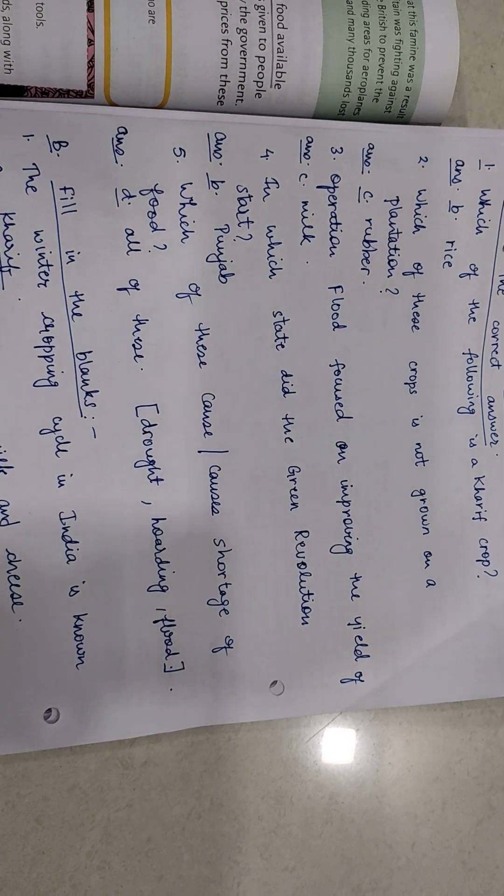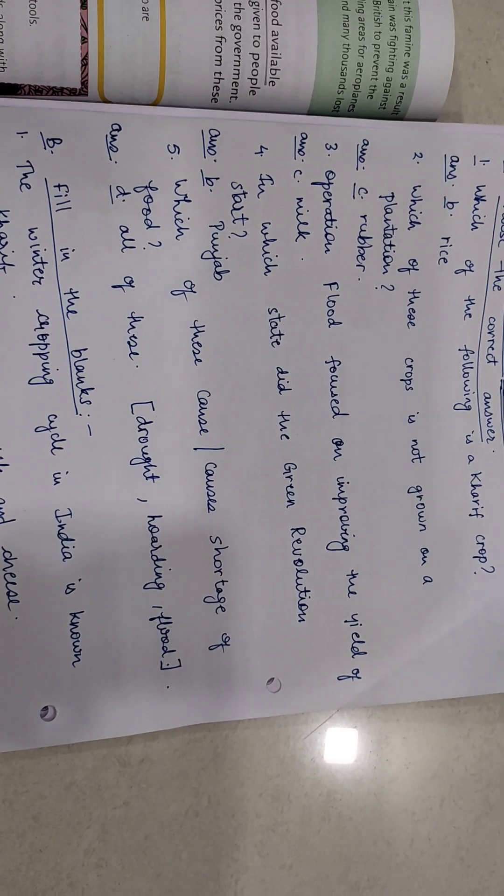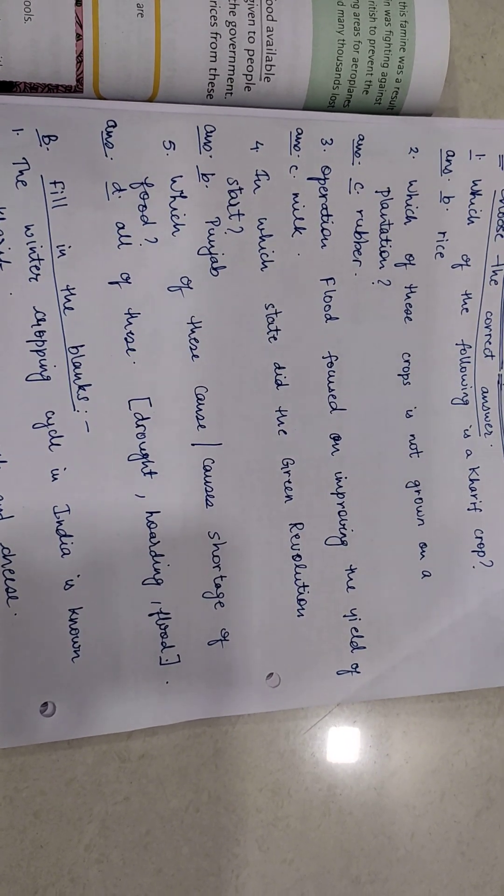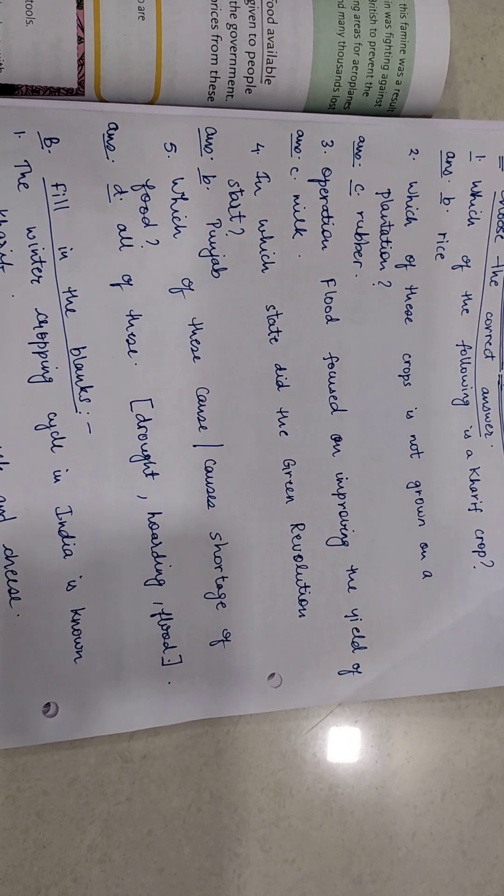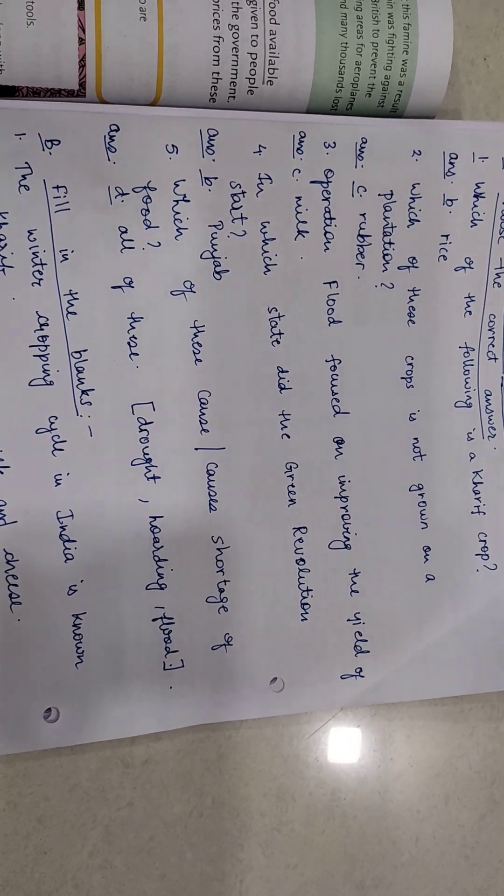There were three options: drought, hoarding, and flood. So collectively the answer is D, all of these.